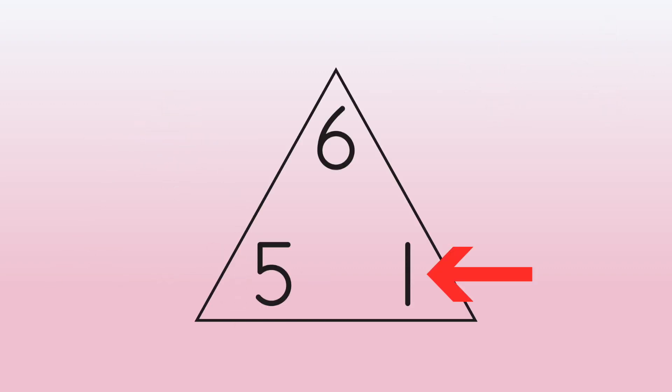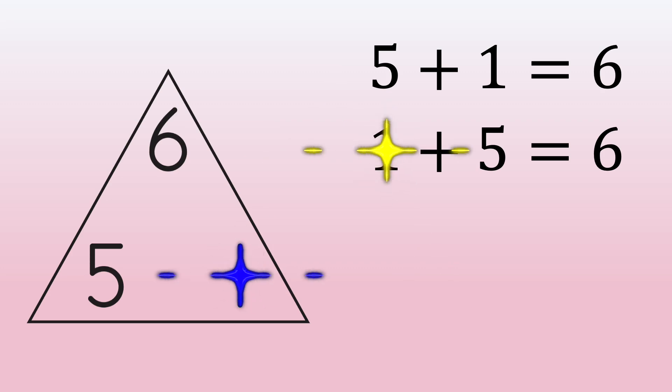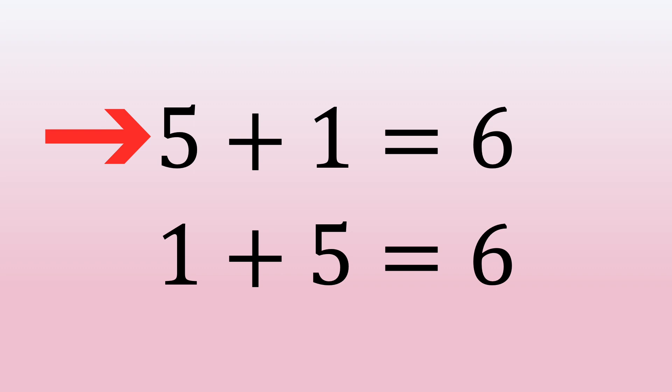Start at the other side and do the same thing. 1 plus 5 equals 6. We've found our two addition facts. 5 plus 1 equals 6, and 1 plus 5 equals 6.